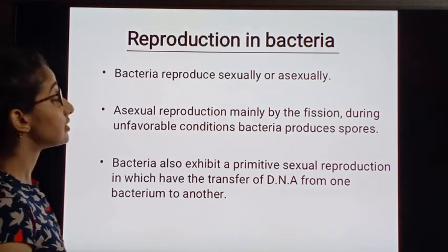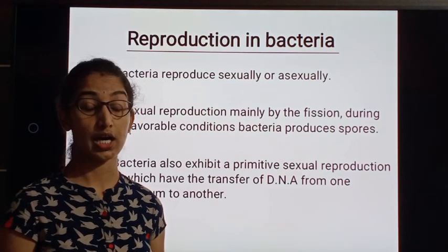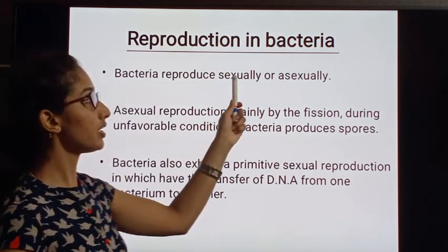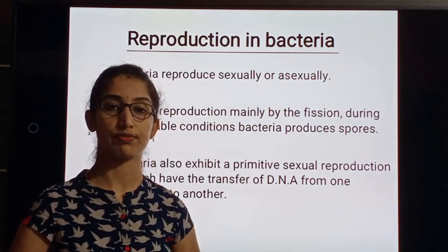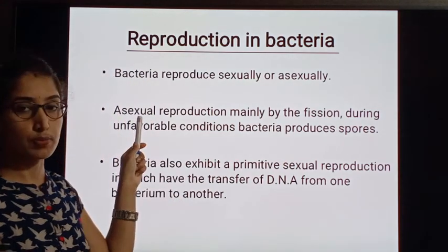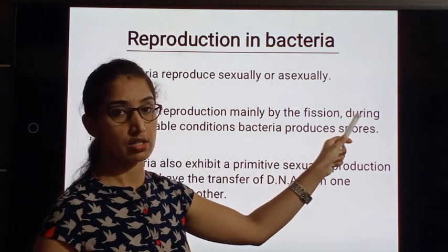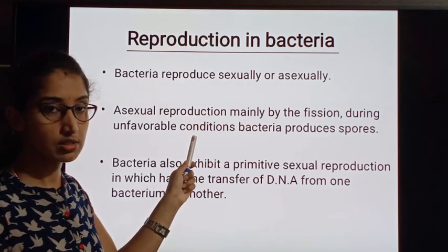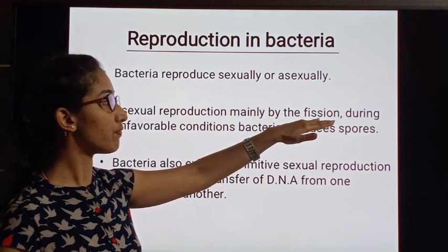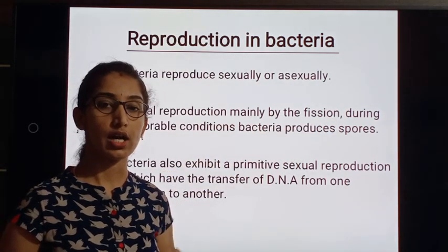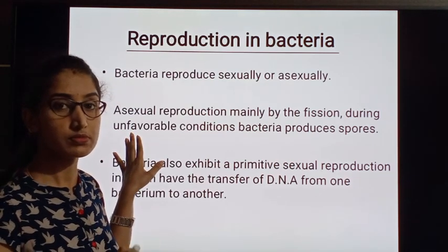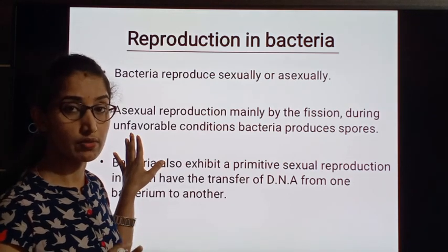Next, reproduction in bacteria. Bacteria reproduce by both sexual and asexual methods. Asexual reproduction occurs mainly by fission. During unfavorable conditions — conditions that are not good for the bacteria — bacteria produce spores. A bacterial cell will undergo fission during unfavorable conditions, and the bacteria start producing spores.